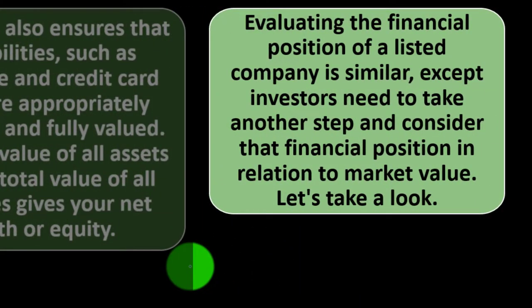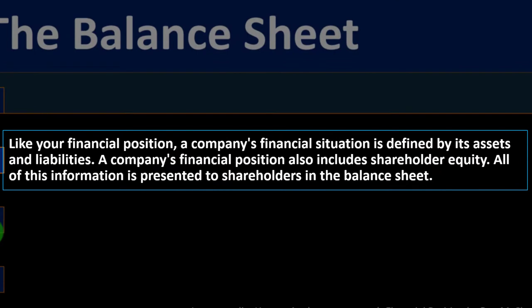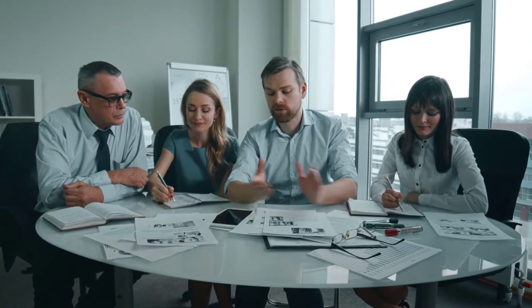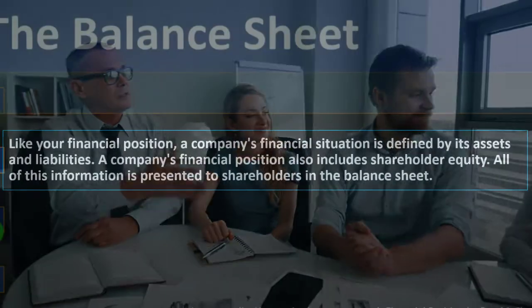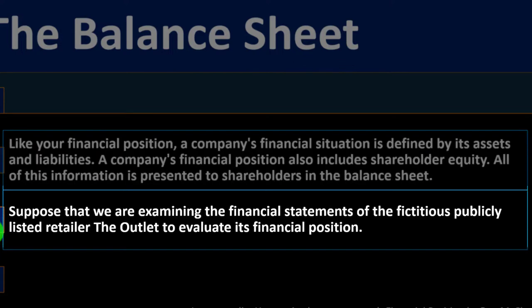Evaluating the financial position of a listed company is similar, except investors also need to consider that financial position in relation to market value. A company's financial situation is defined by its assets and liabilities — the difference between them is equity. All of this information is presented to shareholders in the balance sheet, which represents where a company stands at a specific point in time.